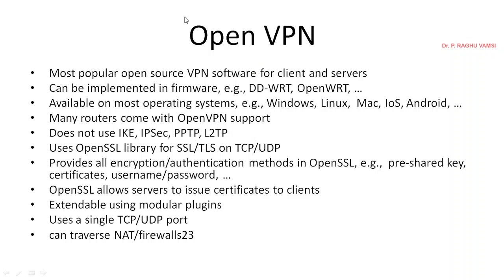OpenVPN is the most popular open-source virtual private network software for clients and servers, and can also be implemented in firmware. Firmware means software implementation of hardware. For example, a firewall was originally a hardware circuit placed at the network, but is now implemented as software within the operating system — that is firmware.